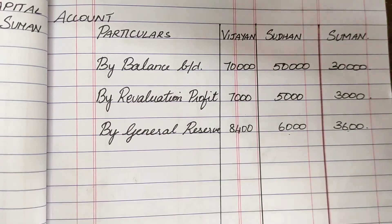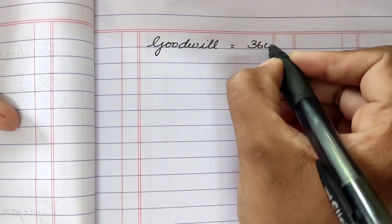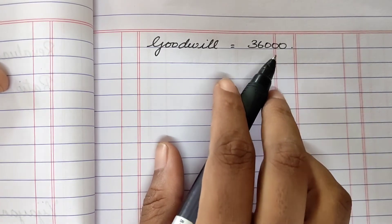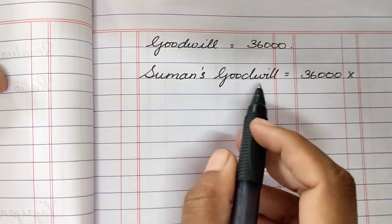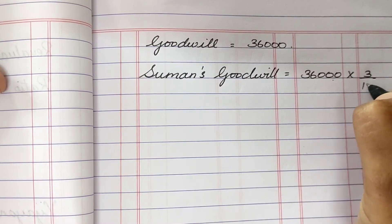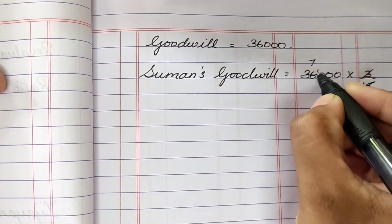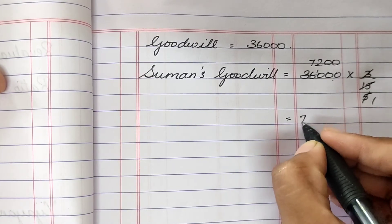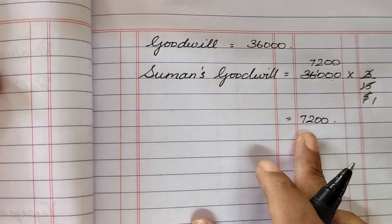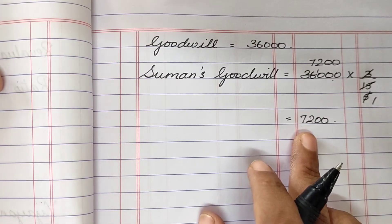Now we figure out goodwill. Goodwill of the firm is 36,000. We find the deceased partner Suman's share of goodwill: 36,000 × (3/15) = 7,200. This 7,200 is Suman's share of goodwill and it will be split among the continuing partners in the gaining ratio. Since no gaining ratio is given in the problem, we go according to the old ratio of the continuing partners.